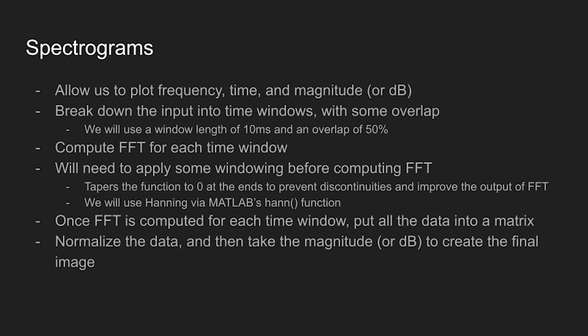And for this, we will use Hanning via MATLAB's hann function. Then once the FFT is computed for each time window, we will put all the data into a matrix, normalize it, take the magnitude or decibels in order to create the final image.